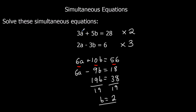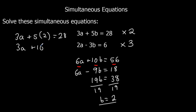Substituting this back in — we don't use the modified equations because they make it harder, so substitute it back into the original top one. 3a plus 5 twos equals 28. That's 3a plus 10 equals 28. Minus 10 from both sides: 3a is 18, so a is 6.